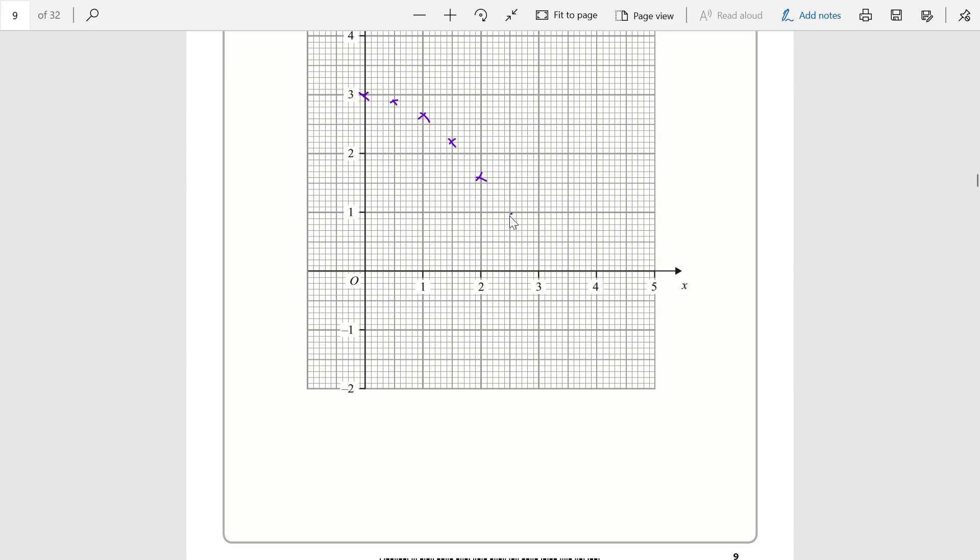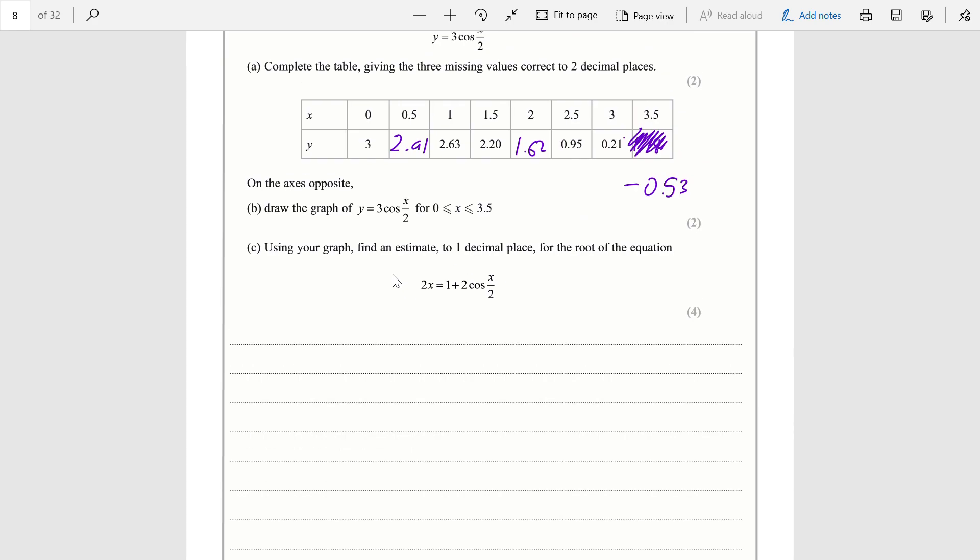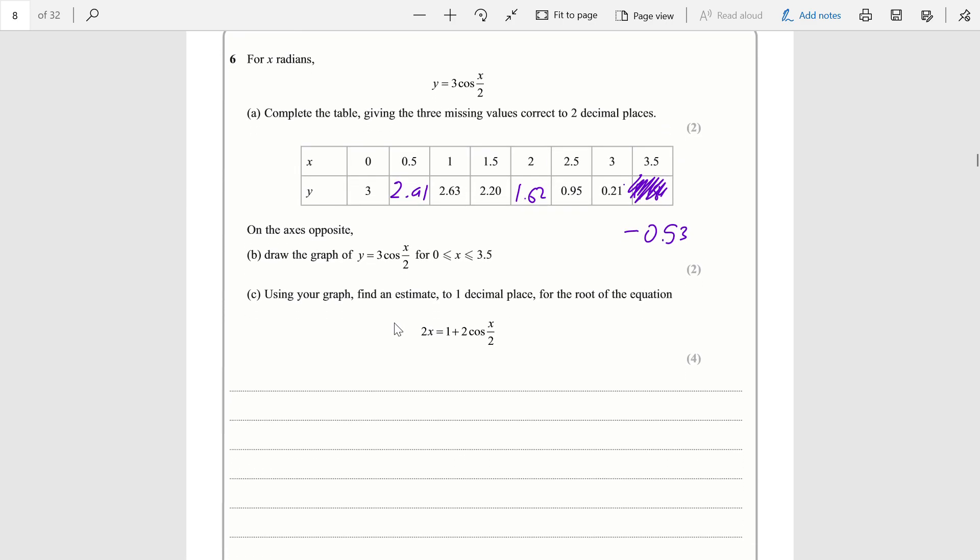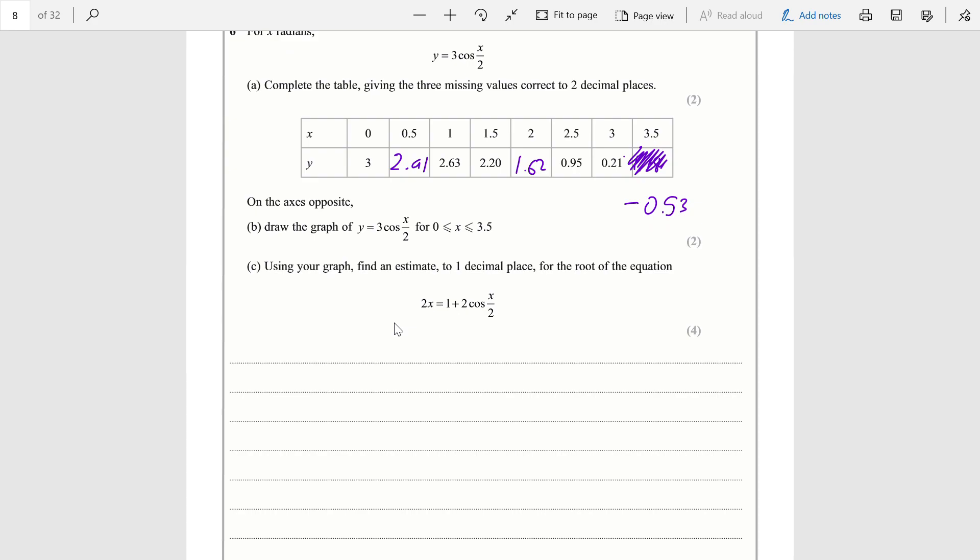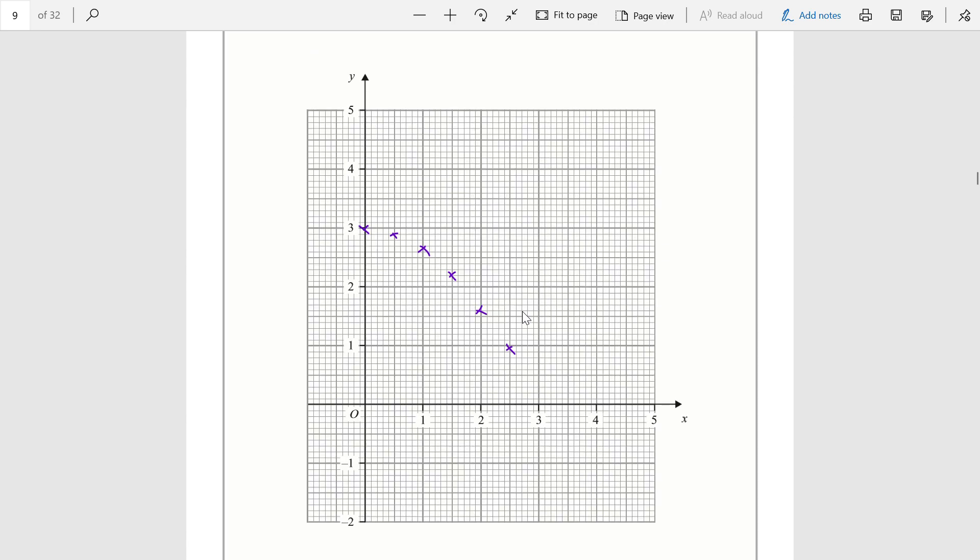2.5 goes to 0.95. Normally for these questions they give you around one millimeter of leeway. Important point: graphs should be done in pencil. We have 3 goes to 0.21, and finally 3.5 is -0.53, which brings us around here.